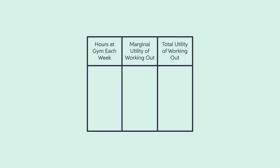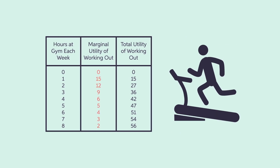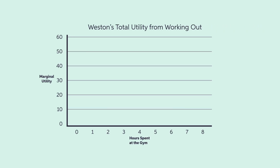For example, Weston likes to spend time at the gym. Let's assume Weston's total utility increases the more he spends time at the gym. Decreasing marginal utility means that his utility rises at a decreasing rate, so each additional hour spent at the gym has less utility than the previous hours. Think of Weston climbing the hill of utility, with each step representing an additional hour at the gym. Diminishing marginal utility means that he gains less added elevation for every step that he takes.